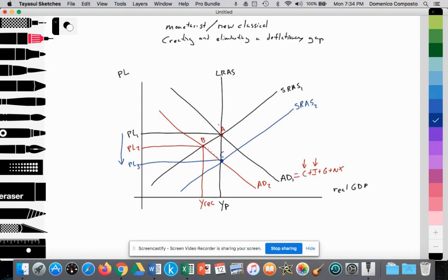We have a downward sloping aggregate demand curve labeled AD1, which equals consumption spending plus investment spending plus government spending plus net exports. It is downward sloping as a result of the wealth effect, the interest rate effect, or the international trade effect.